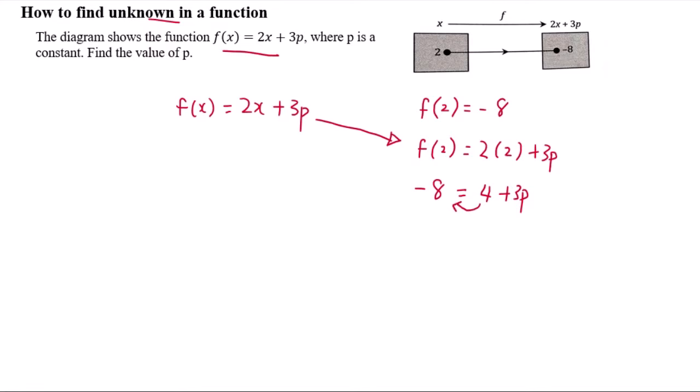So bring your 4 to there and it will become negative. So negative 8 minus 4, you will get negative 12 equal to 3p. p will be equal to negative 4. So this is a simple case. This is how you find an unknown in a function.